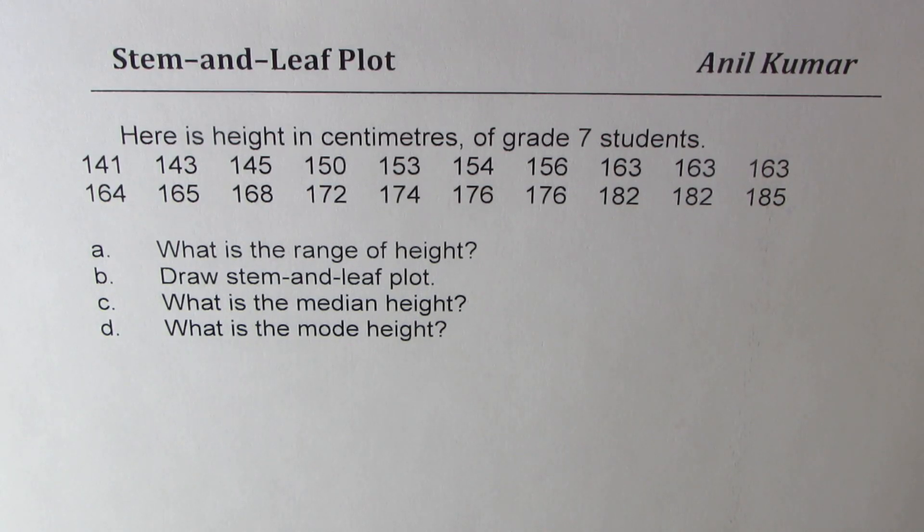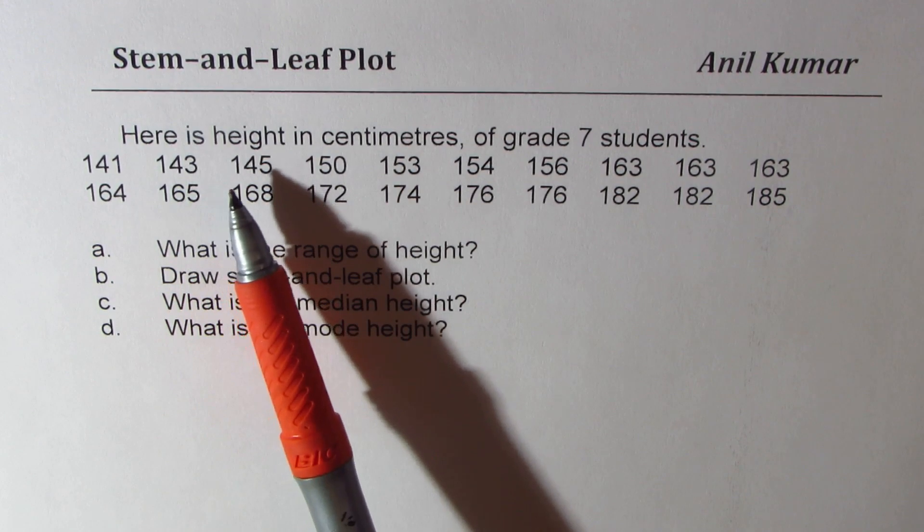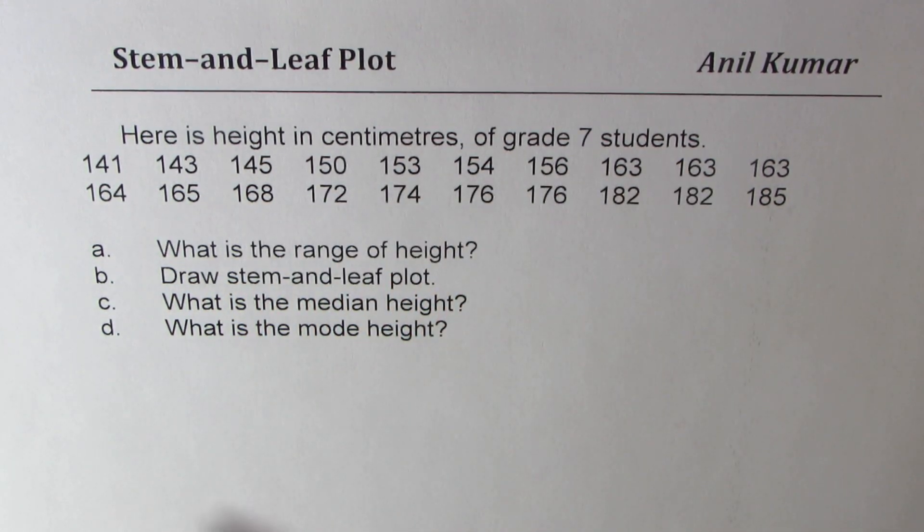I'm Anil Kumar sharing with you a very interesting question on stem and leaf plot. We'll analyze data of height of students in grade 7. Here is height in centimeters of grade 7 students: 141, 143, 145, 150, and so on. While this data has been arranged, you might get raw data which is not arranged. In that case, I'll appreciate first you write it in proper order and then create stem and leaf plot.